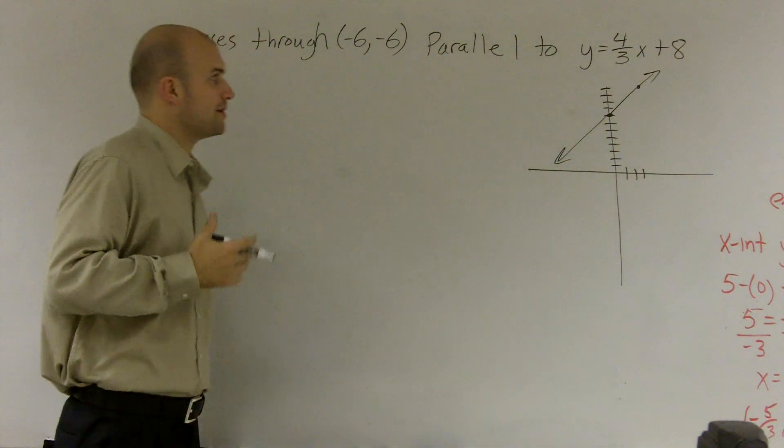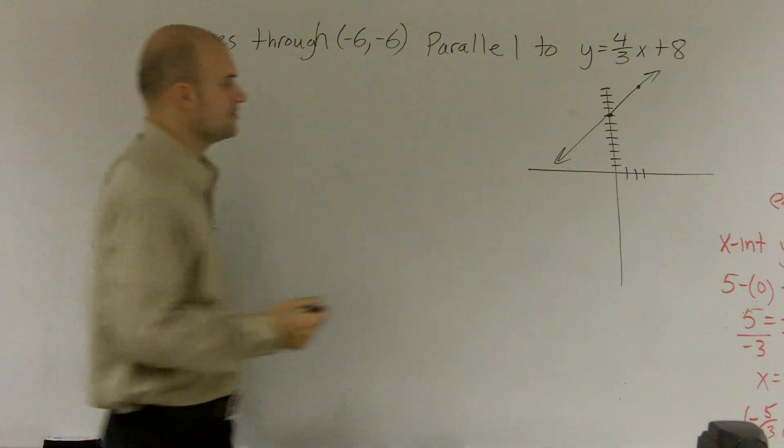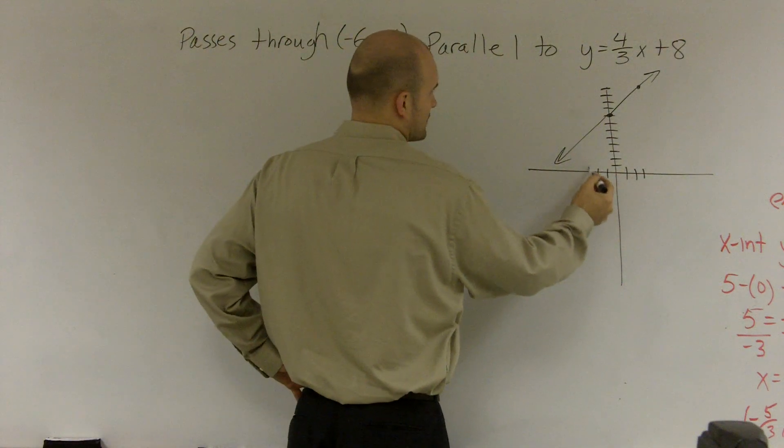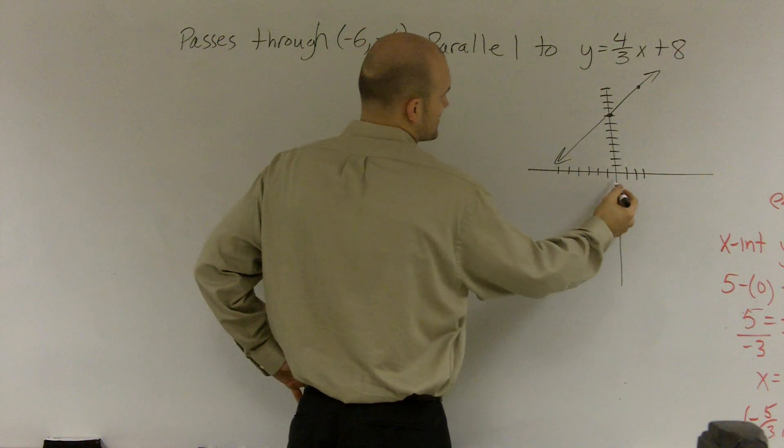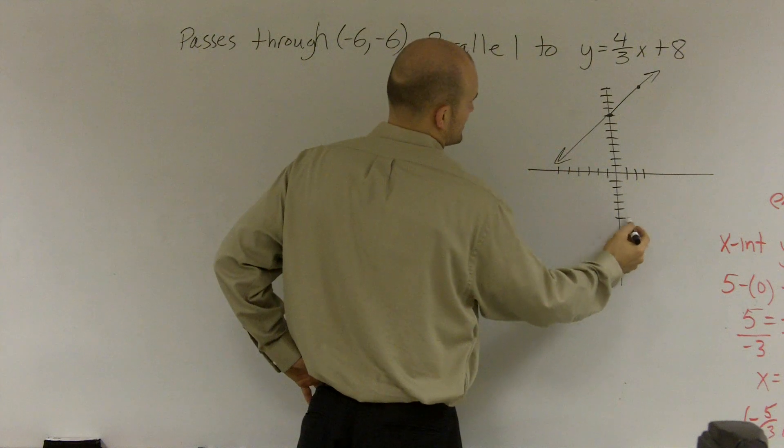Okay, so what we have is a parallel line, right? And it needs to go through the point (-6, -6). So 1, 2, 3, 4, 5, 6, and down 6: 1, 2, 3, 4, 5, 6.